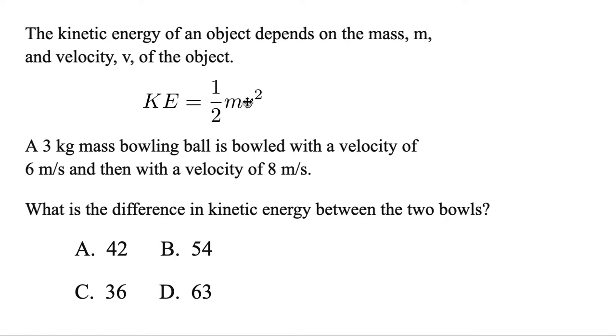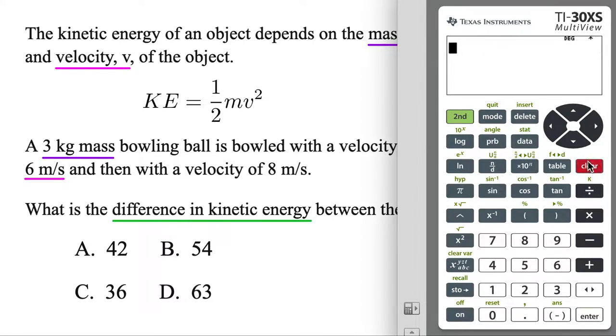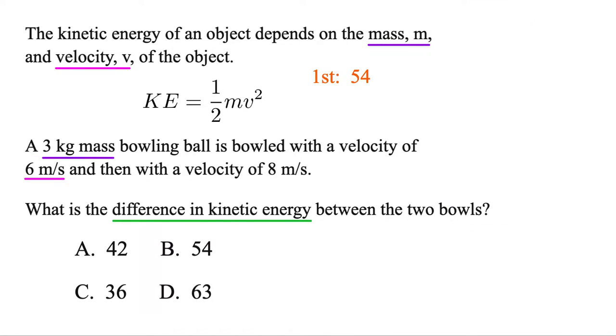You could be given an equation like this. In this case, we want to find what is the difference in kinetic energy between two bowls. We have a three kilogram mass bowling ball, but that's the mass. So, we're just going to change M right there to three. And then it's bowled with a velocity of six. So, we're going to change V to six. Let's go ahead and type that in. We got our fraction, one-half, times the mass, three, times the velocity, six. But this one's squared, so you're going to use that X squared button right there. 54. That's the kinetic energy for the first bowl.